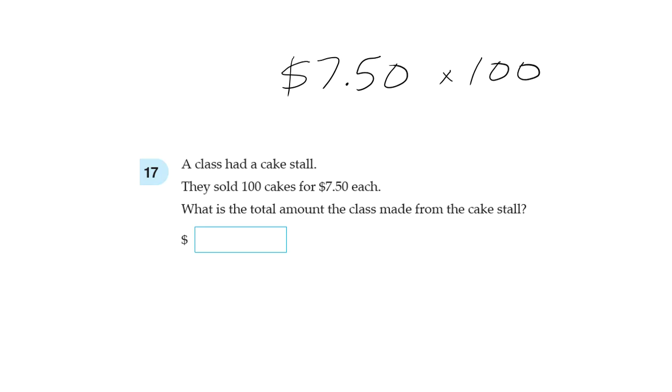So a quick way to do this: how many zeros are in 100? Two zeros. So that means we move the decimal point to the right two places. If it's multiplied, then we move to the right. And if it's divided, then we move the decimal point to the left.